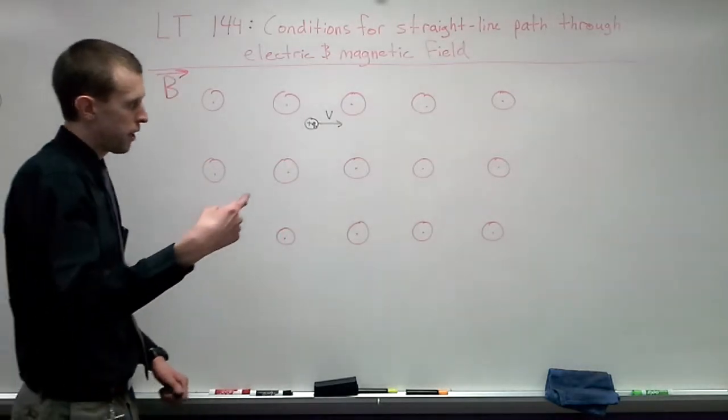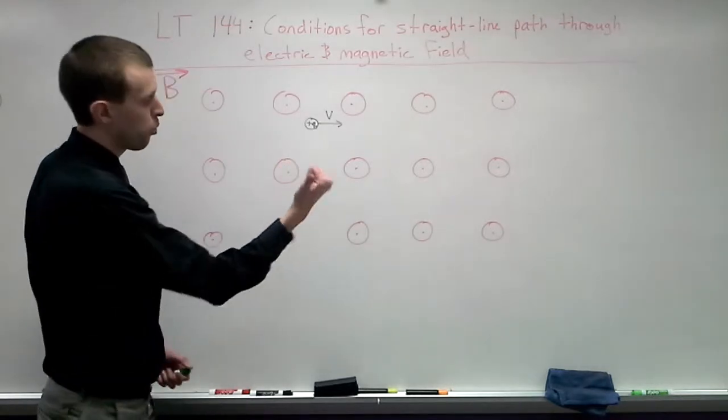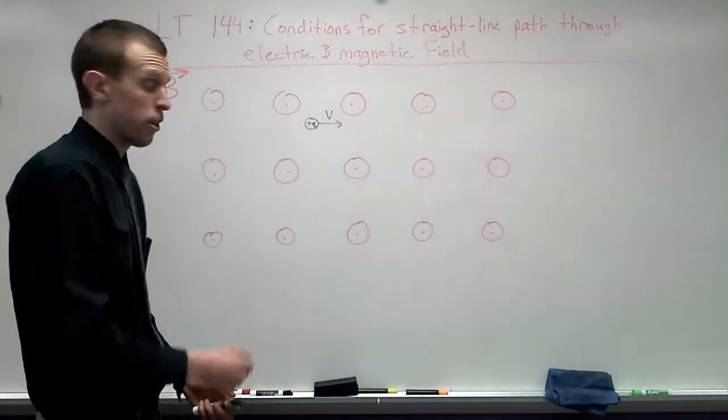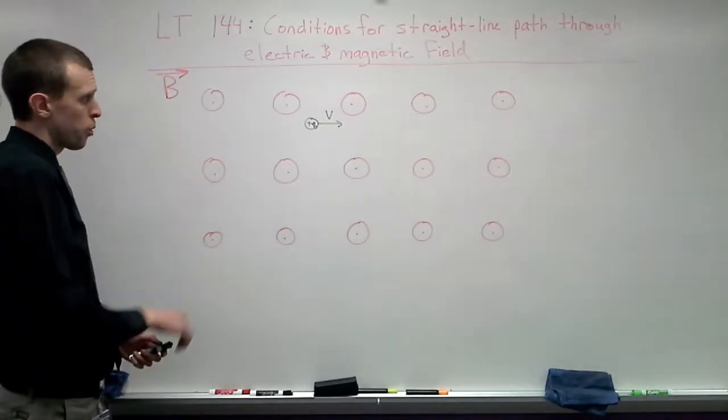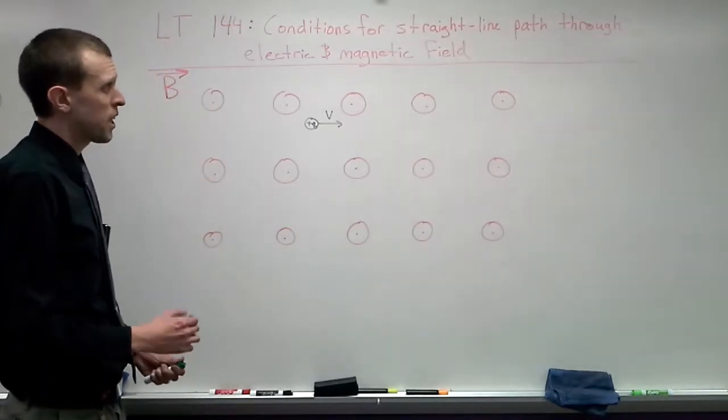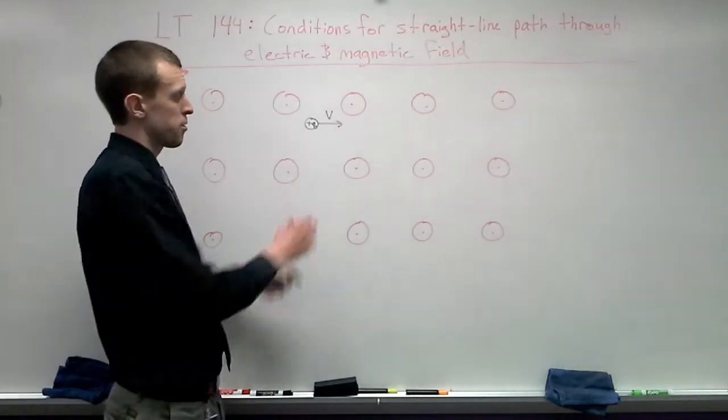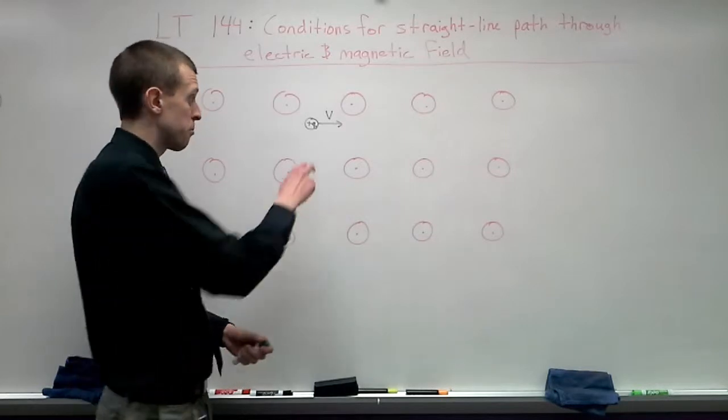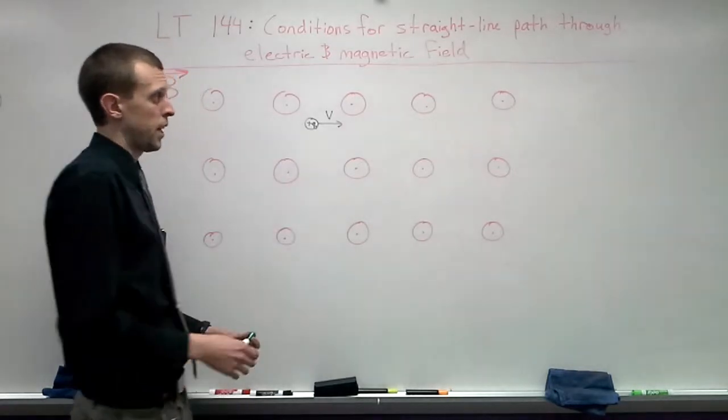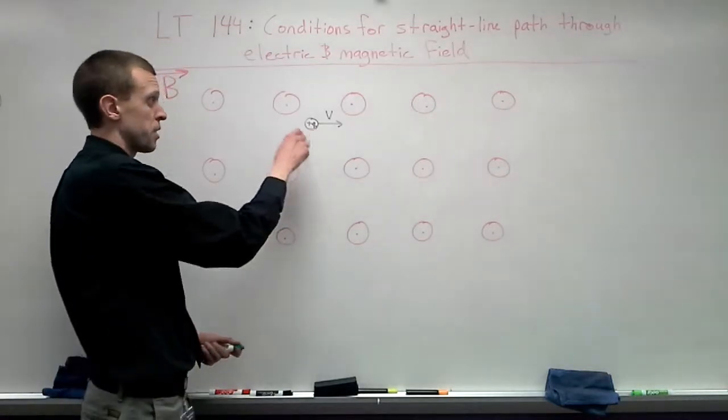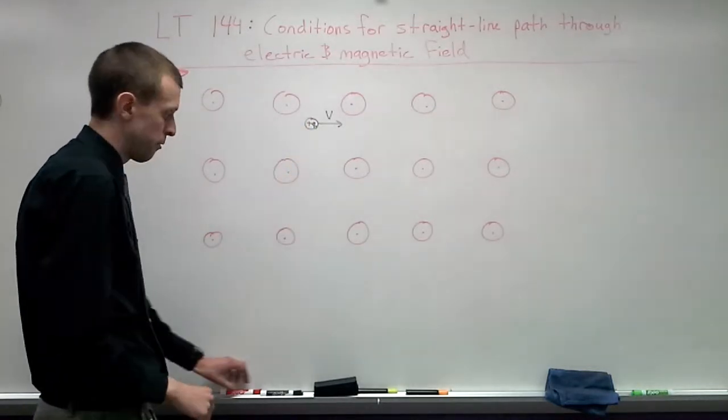These are all vectors pointing toward us out of the board here. So we have the little tip of the arrow coming toward us. We want to know what kind of an electric field would we have to apply in this same region of space to keep our particle moving in a straight line.